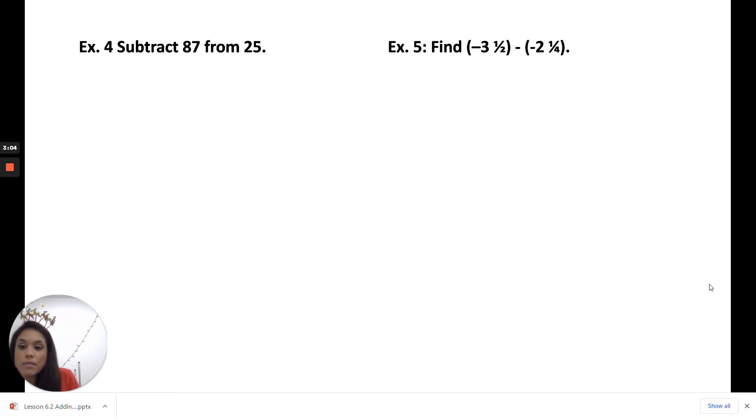Subtract 87 from 25. We are taking 87 away from 25. Make sure you read that carefully. So this is going to look like a positive 25 minus 87. We're going to change the signs: 25 plus a negative 87.